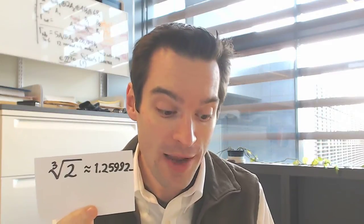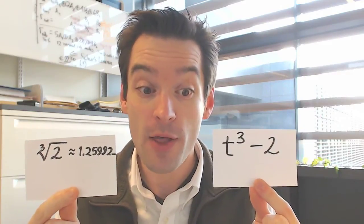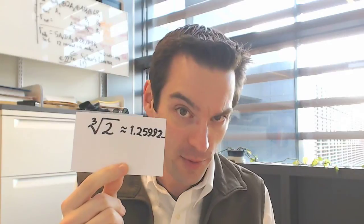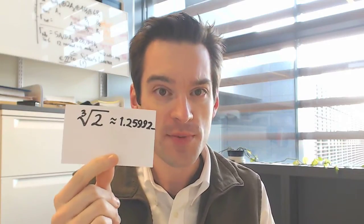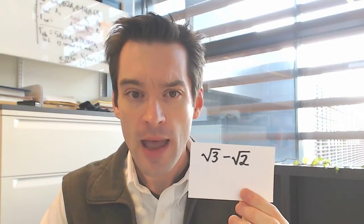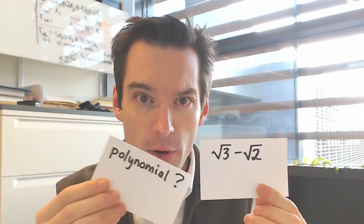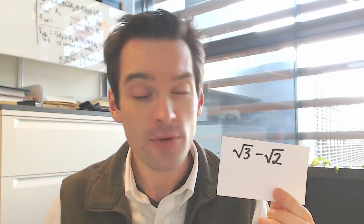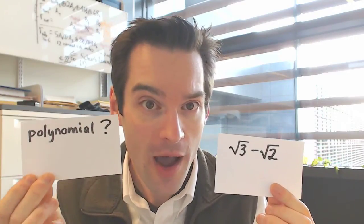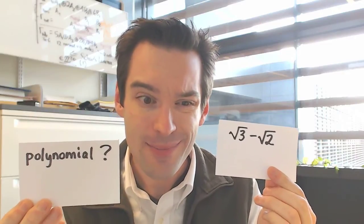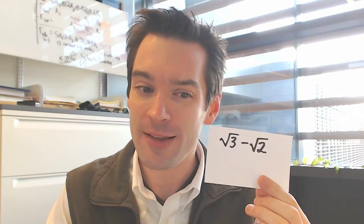If we're looking to adjoin the cube root of 2 to the rationals, we should think about the quotient of the polynomial ring of the rationals by the principal ideal generated by t cubed minus 2. For a simple number like this, it's easy to see what polynomial corresponds to this algebraic number. But in other situations the answer might not be so clear. If I have a number like the square root of 3 minus the square root of 2, how do I find a polynomial of which that number is a root? How do I even prove that it's algebraic?